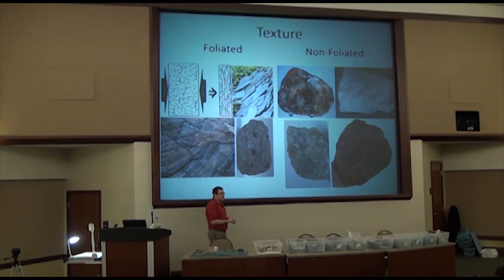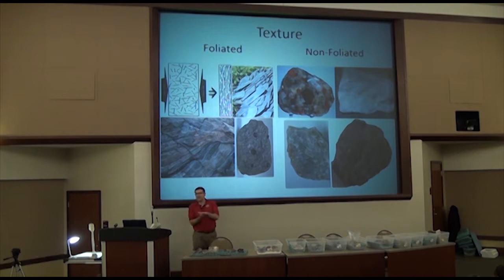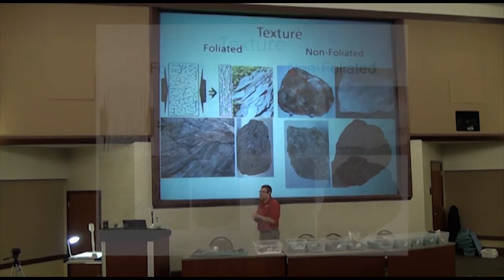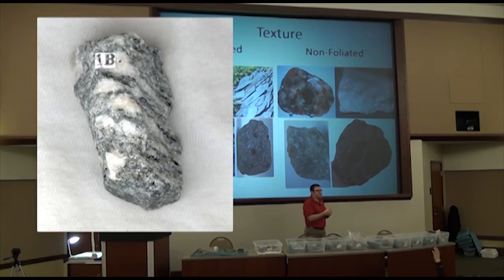There's basically one feature that separates certain metamorphic rocks from others: whether or not they're foliated. Foliated is a fancy word for if it's got lines that it will break on, or that you can see. Gneiss is an excellent example of a rock that's foliated — it's got those stripes that are often black and white.